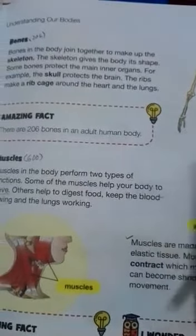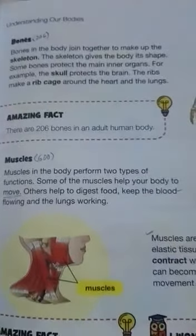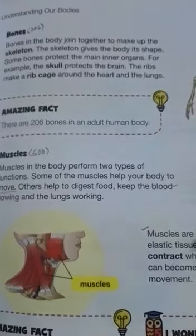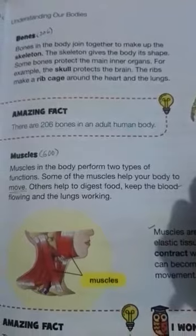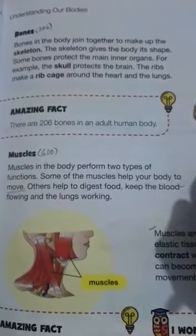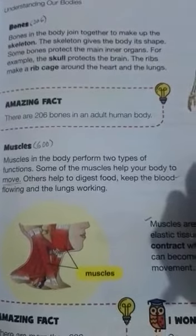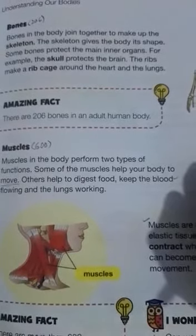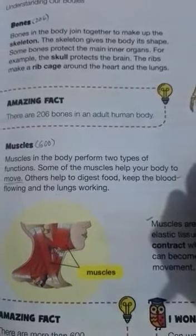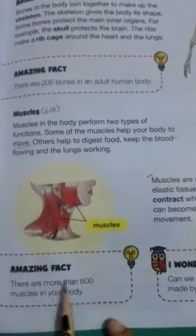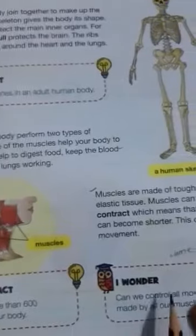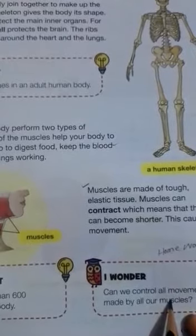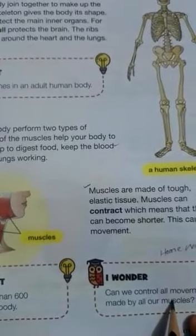There are two types of muscles in our body: voluntary muscles and involuntary muscles. Voluntary muscles are under our control — for example, when we contract or relax our hand, those muscles are under our control. Involuntary muscles are those which we cannot control, for example, digestion in the small intestine — the small intestine contains involuntary muscles which are not in our control. Amazing fact: there are more than 600 muscles in your body. Can we control all movements made by all our muscles? No, because some muscles are involuntary, so we can't control all muscle movements.